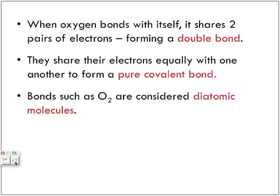When oxygen bonds with itself, it shares two pairs of electrons forming a double bond. They share their electrons equally with one another to form a pure covalent bond — another term for nonpolar covalent. Bonds such as O2 are considered diatomic molecules, meaning two atoms of the same element.